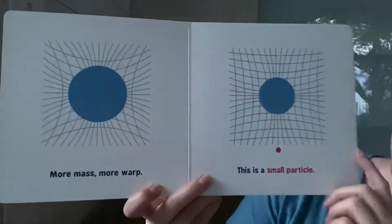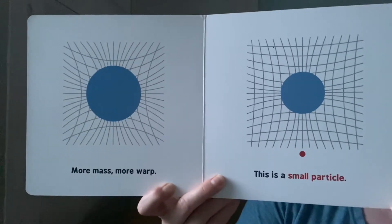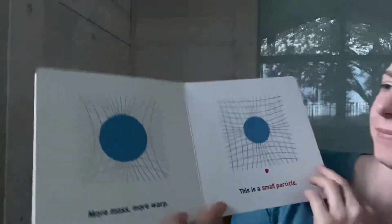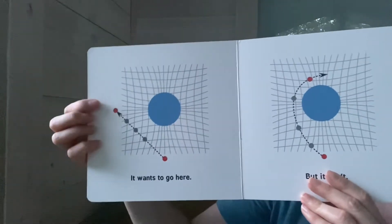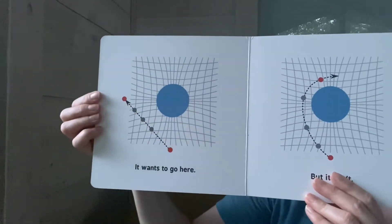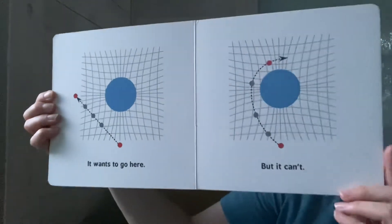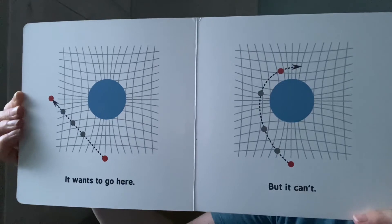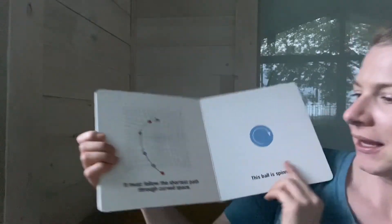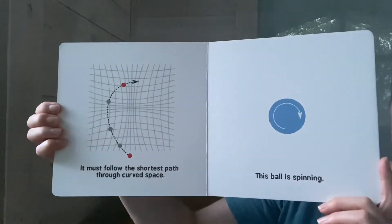This is a small particle. It wants to go here. But it can't. It must follow the shortest path through the curved space.